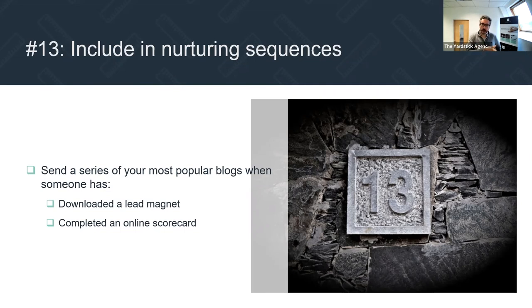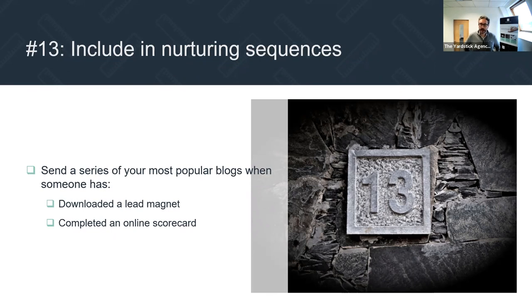Number thirteen: include your most popular blogs in nurturing sequences. Lead magnets, where people download a guide in exchange for their data, should be followed up with your most popular blogs — maybe once a week for the first four weeks, then into your newsletter system. The same applies to online scorecards, which are incredibly popular right now. If someone's completed a scorecard, use those popular blogs to add more value and walk them up the value ladder.